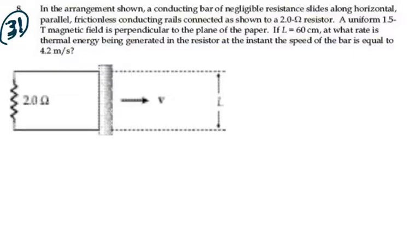Alright, so we have a moving conductor. Velocity is 4.2 meters per second. It's part of a circuit where the resistance is 2 ohms. And the length of this bar right here is 0.6 meters, 60 centimeters.